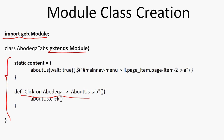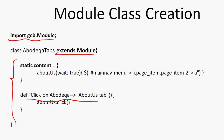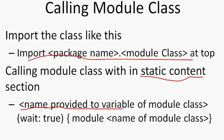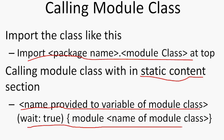Now the question is: we have just created the module class, but how are we going to use it? Wherever we need to use this module class in any of the pages, first we import the module class. Then in the static content section we provide a variable, write 'module' followed by a space and the name of the module class.